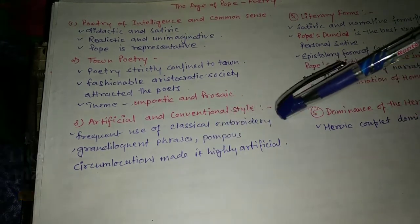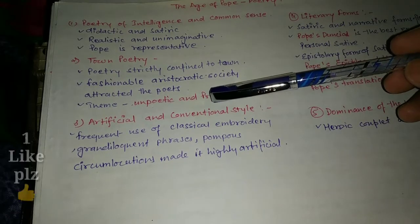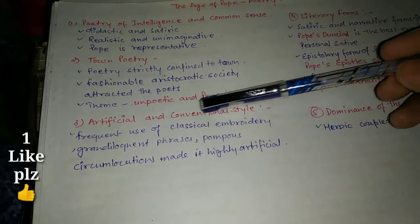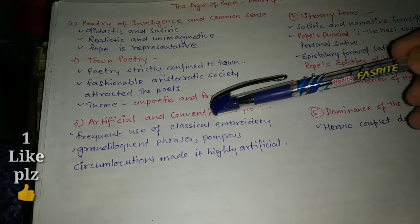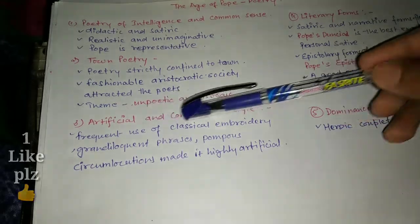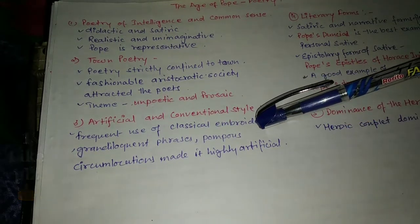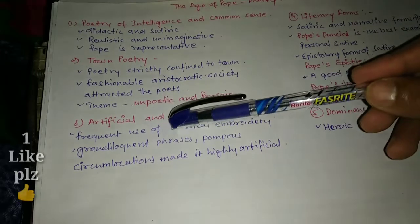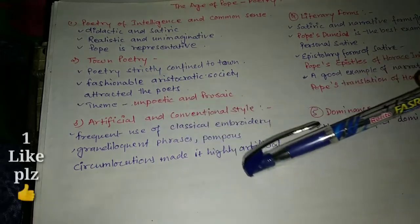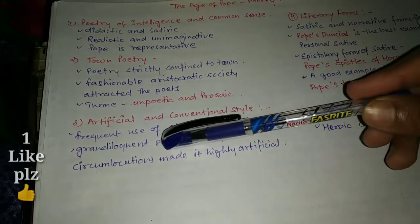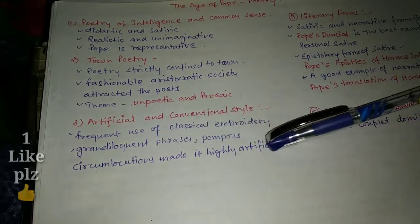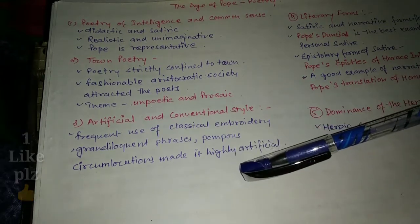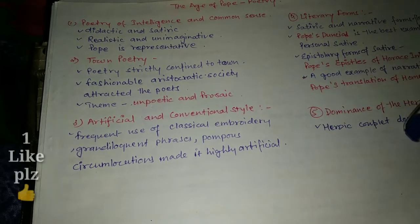Artificial and conventional style — as mentioned, they were focusing on the classical tradition. There was frequent use of classical embroidery, grandiloquent phrases, pompous circumlocutions, which made the style highly artificial.